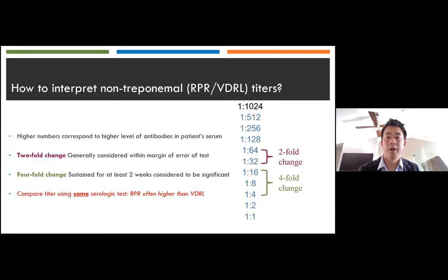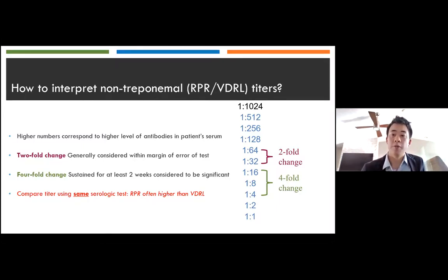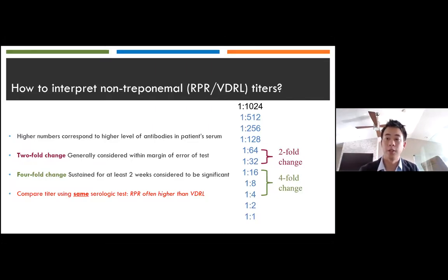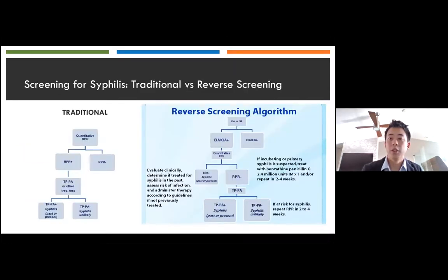How do you interpret RPR and VDRL results? These tests correlate with disease activity and are used to follow treatment response. Results should be reported quantitatively. A two-fold change is within the margin of error; a four-fold change—equivalent to two dilutions, for instance from 1:16 to 1:4—is considered necessary to demonstrate a clinically significant difference. Sequential serologic tests should be performed using the same testing method and preferably by the same laboratory. RPR titers are often slightly higher than VDRL titers, so the two cannot be compared directly. There are two ways to screen for syphilis: the traditional screening algorithm and the reverse screening algorithm.